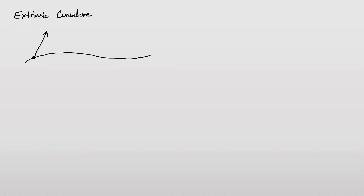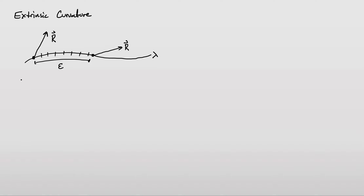I'm going to start off with a picture. Suppose we have some curve in space, and at some point in the space we have some vector r. Then at some small time interval epsilon, our vector has moved. This curve is parameterized by lambda, so as we march along the curve we increase our values of lambda. We want to know how the vector r changes with respect to lambda.